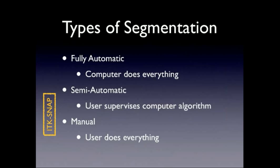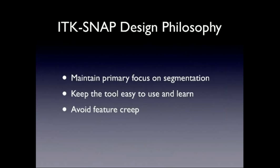ITK-SNAP doesn't do fully automatic segmentation — it's not in that world. ITK-SNAP handles semi-automatic and manual segmentation. These techniques are useful when the segmentation problem is too difficult for an automatic method, or when the performance of the automatic method is not reliable enough. Sometimes you start with a fully automatic method but want to correct something on individual images, and this is where ITK-SNAP comes in useful. It also supports completely manual segmentation.